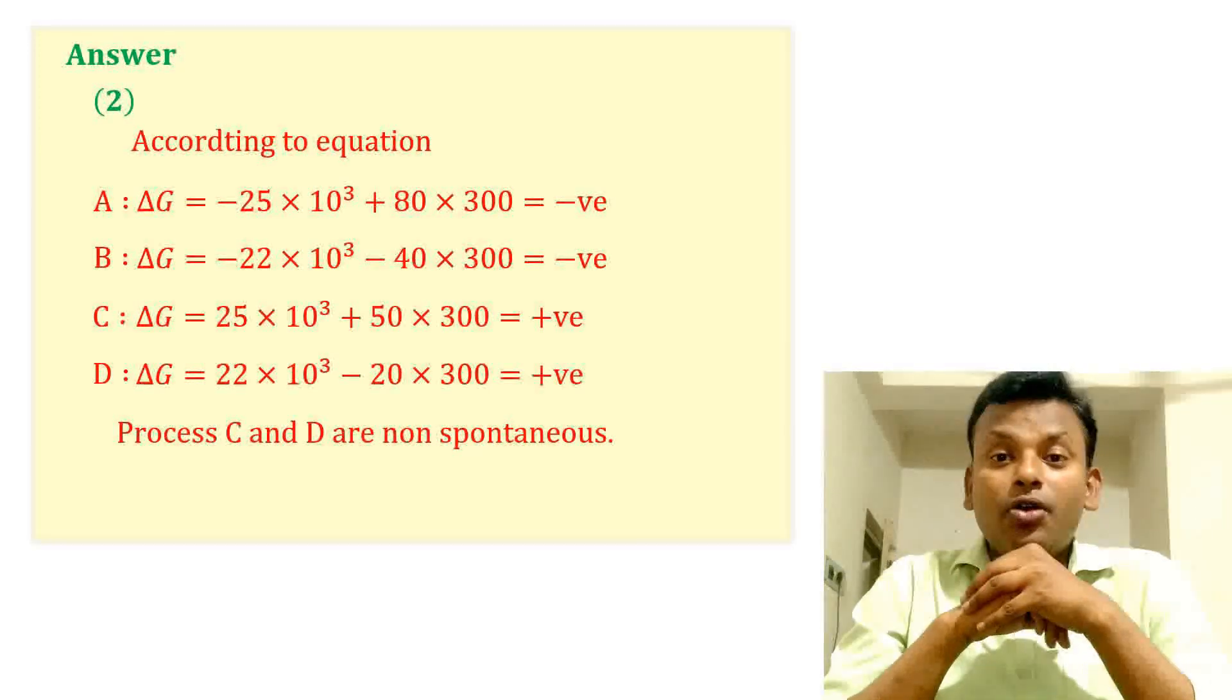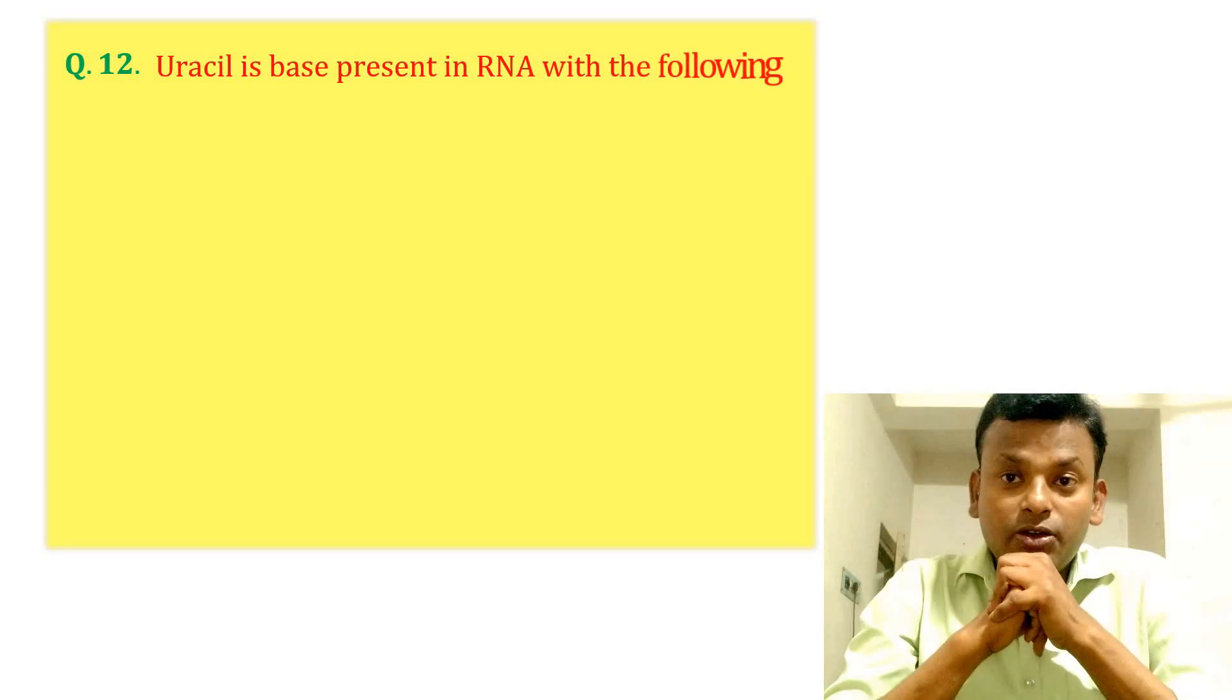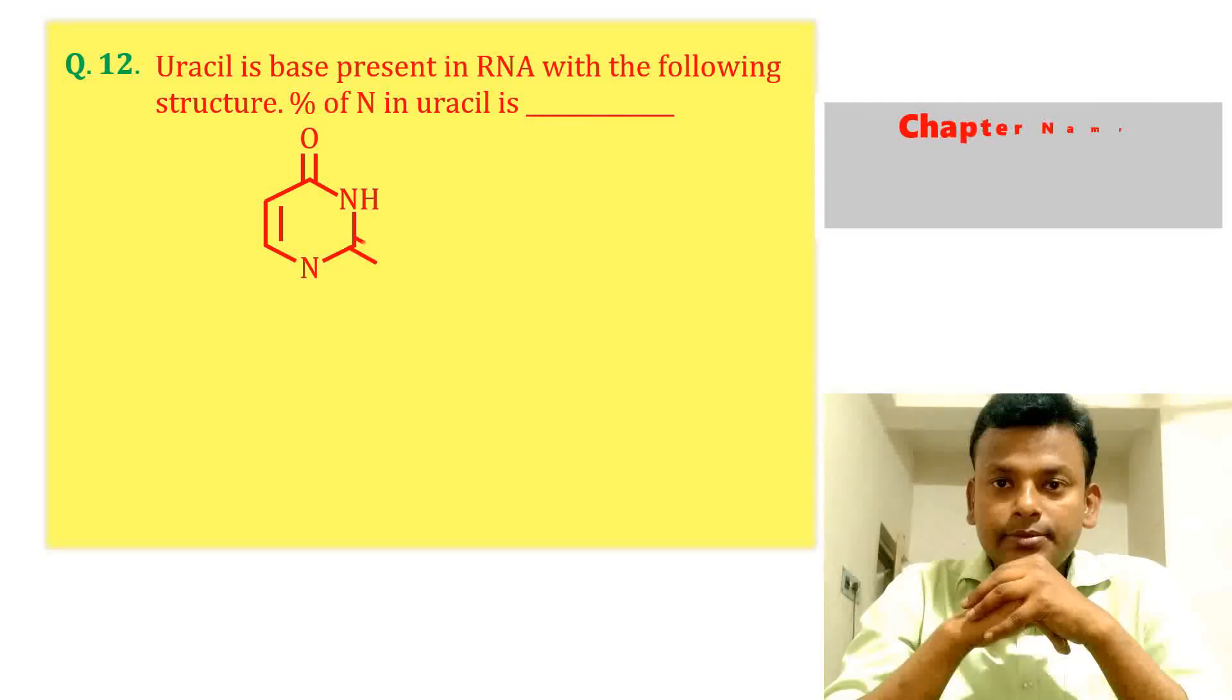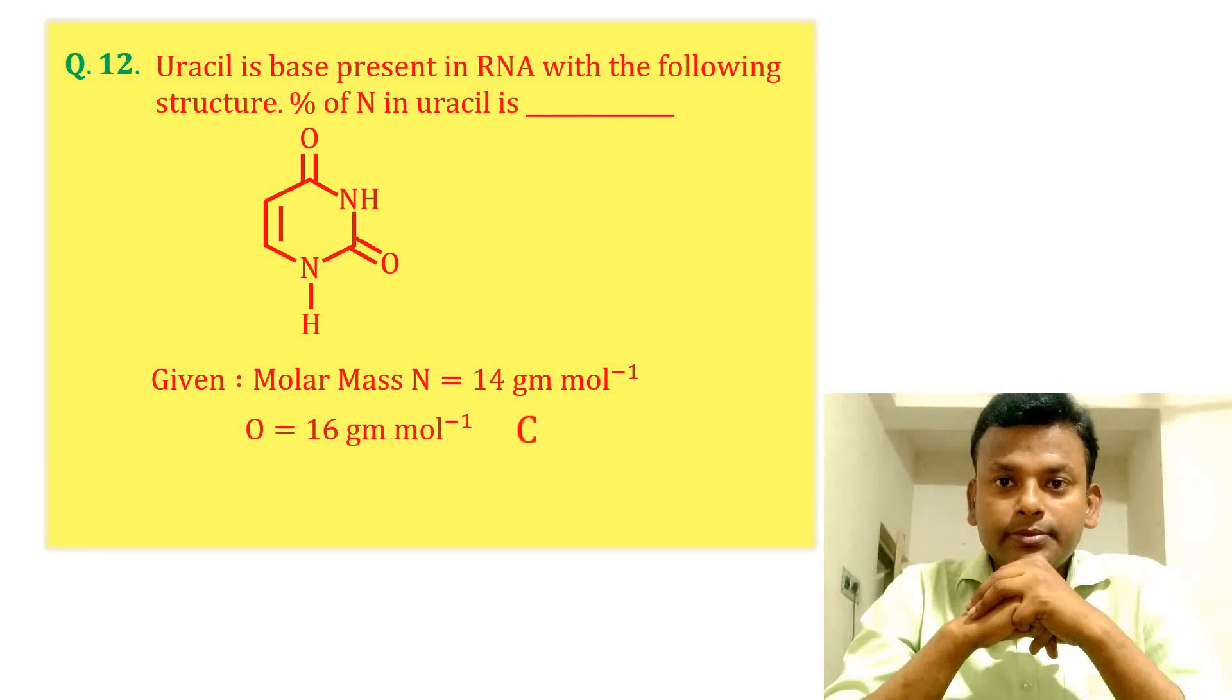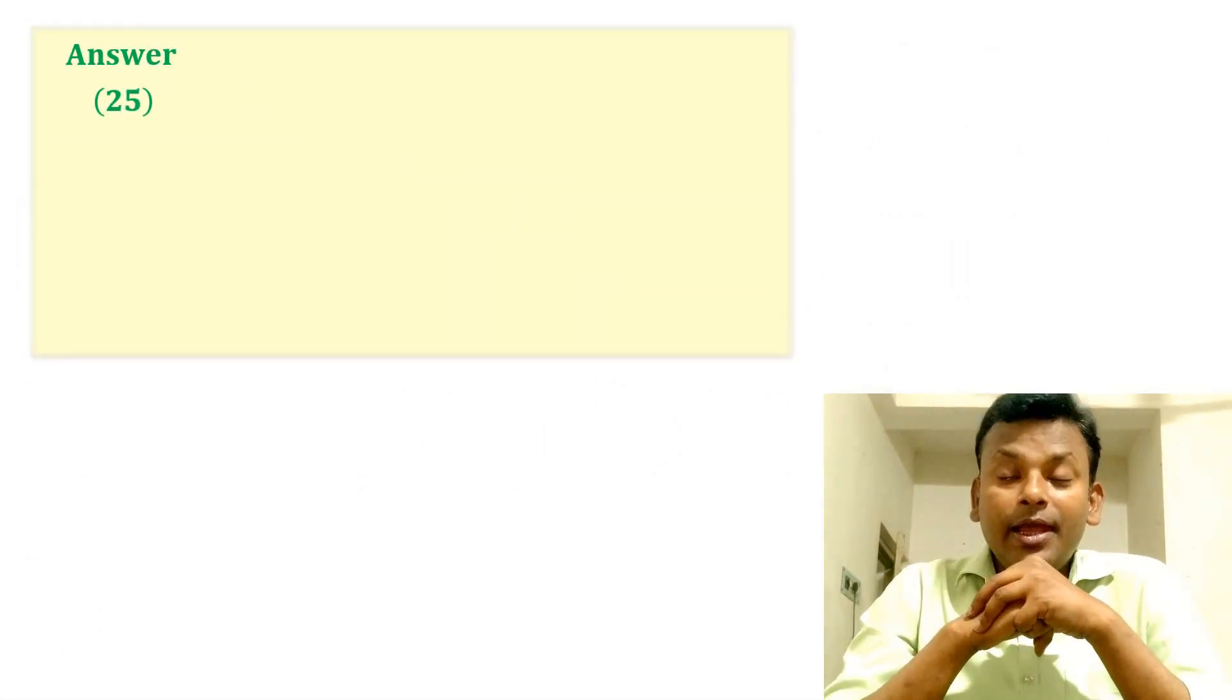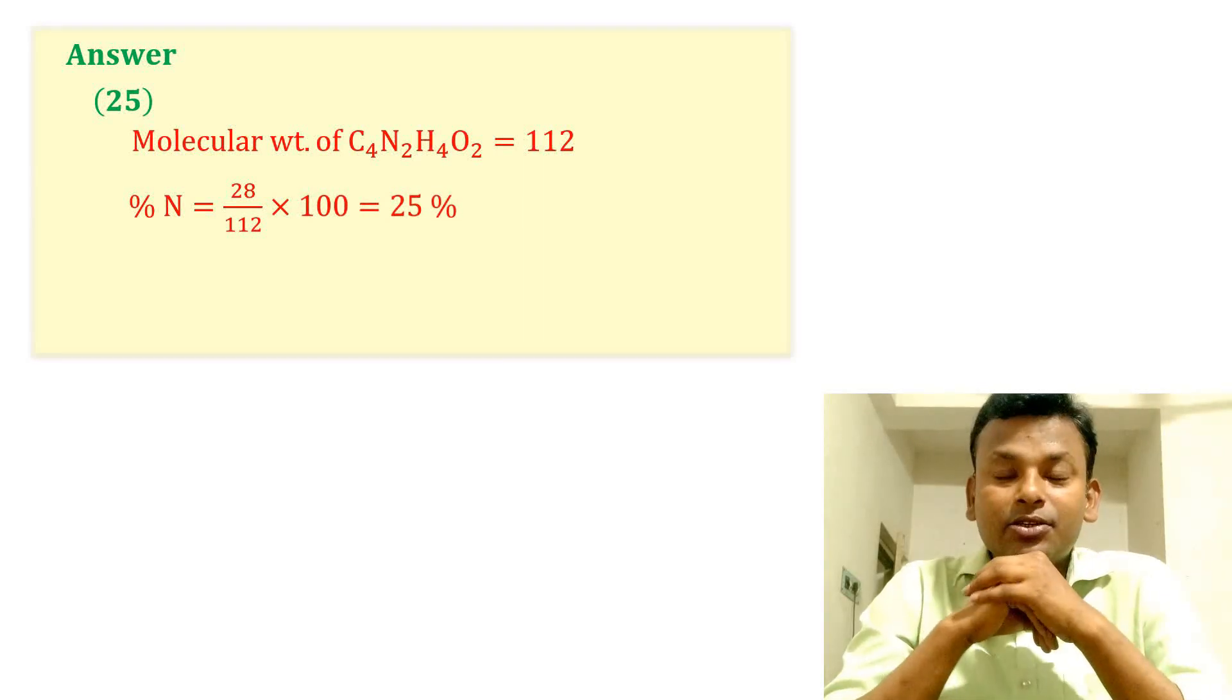Question 12: Uracil is a base present in RNA with the following structure. Percentage of nitrogen in uracil is? Answer is 25. Molecular weight of C4N2H4O2 equals to 112, that is uracil. So percentage of nitrogen is 25. It is a simple question, so answer is 25.